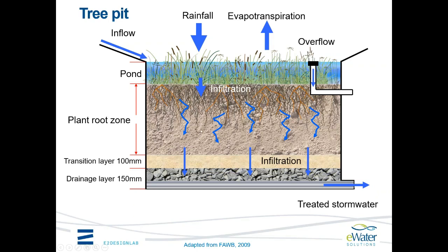Water infiltrates into the media according to the unsaturated hydraulic conductivity of the soil, which is determined based on soil moisture. Once inflow exceeds that rate, water starts to pond at the top, the soil eventually starts to saturate, and we move into a Darcy flow situation where the head of ponded water and the saturated hydraulic conductivity dictate the infiltration rate through the system. For tree pits, it's preferable for the gravel drainage layer to be a strip on the side rather than extending across the entire tree, so as not to interfere with roots.